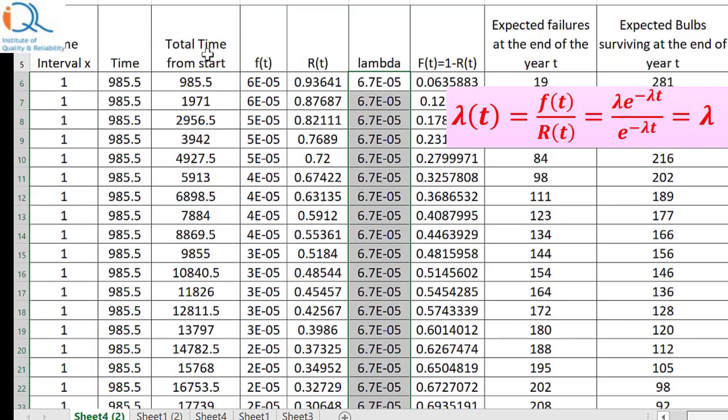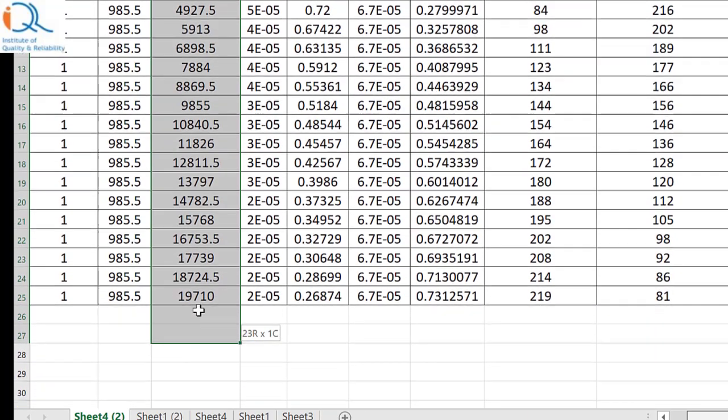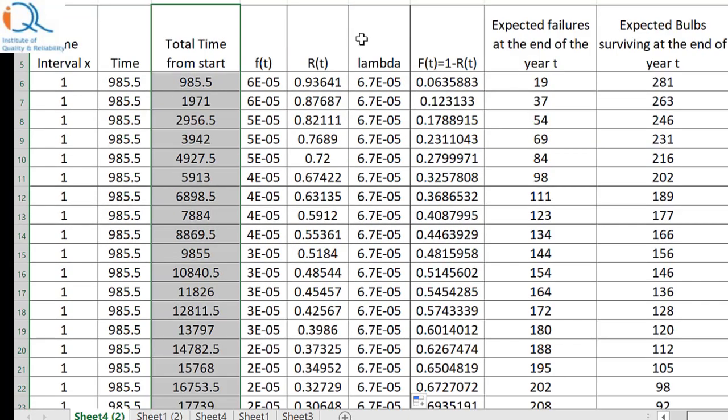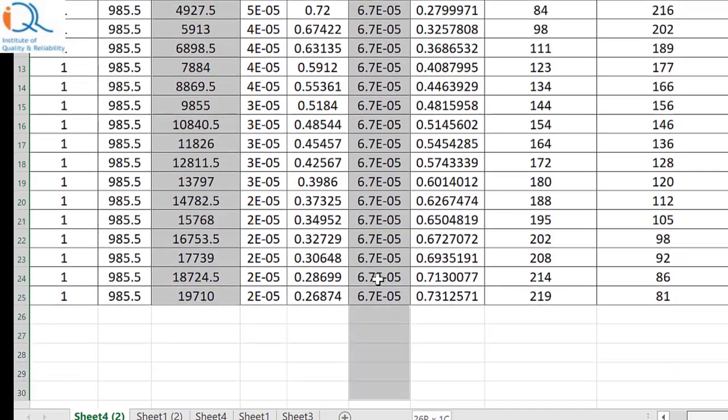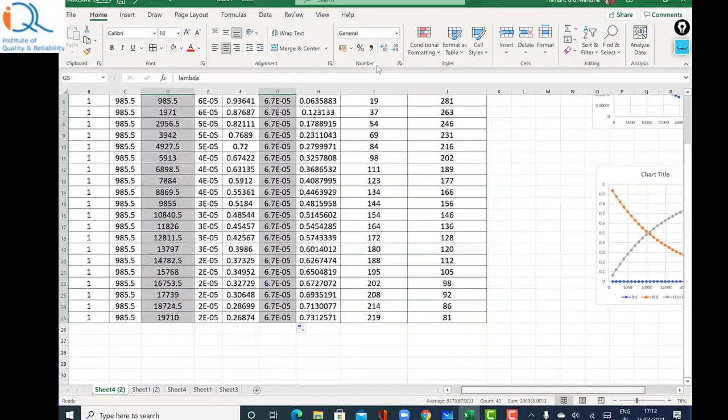If I plot this with time. I press the control button and then select the hazard function. That is lambda. Obviously it is constant so you will get a straight line anyway. But you can see how this works. And insert.